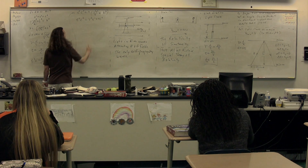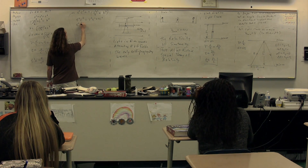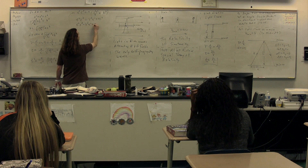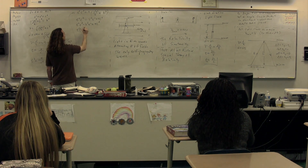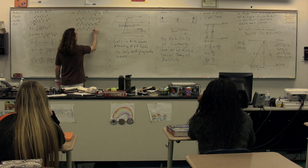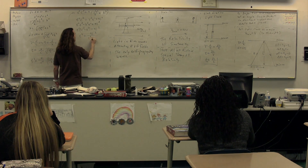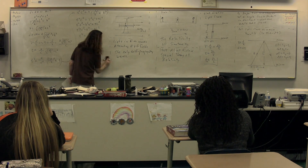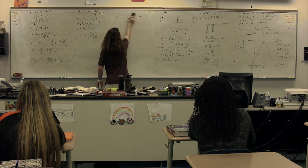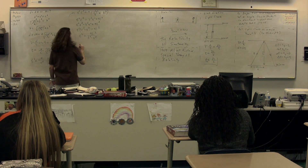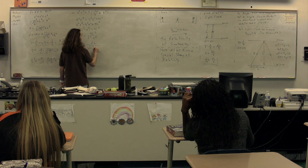Therefore, T² = 4L² / (C² − V²). Taking the square root of the whole equation, we get T = 2L / √(C² − V²).